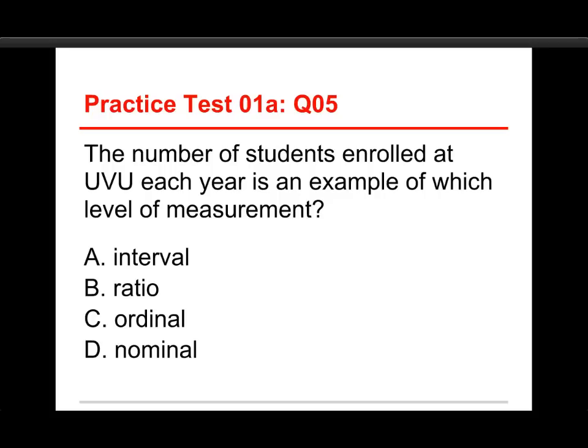The last question: the number of students enrolled at UVU each year is an example of which level of measurement? The choices are interval, ratio, ordinal, and nominal. The answer is B, ratio. Because the number of students starts at zero — zero indicates no students at all — and 20,000 students is twice as many as 10,000, so you're able to make ratios between the numbers.